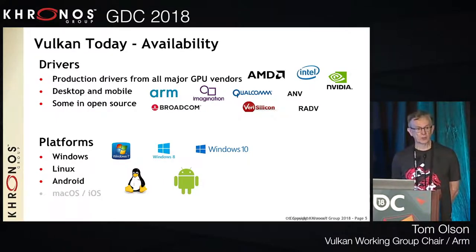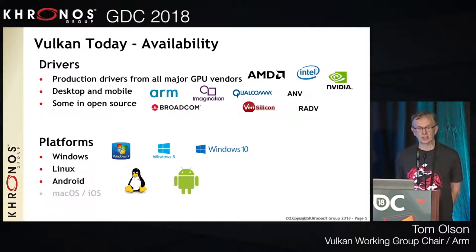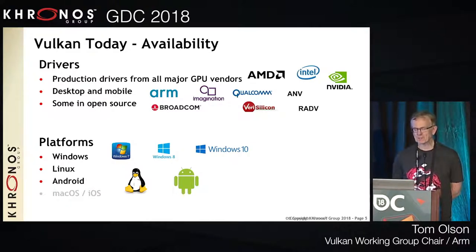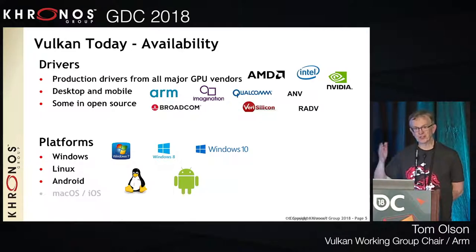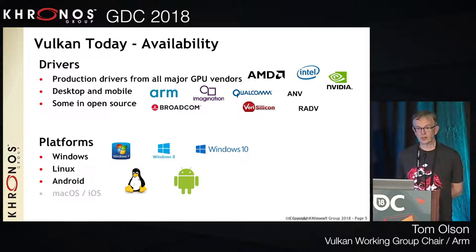Platform support is great on Windows 10 and a little spottier on older versions. On Linux, the Mesa team has ANV and RADV in their mainline. It's not entirely in all distros yet — there's a pipeline before you end up in an Ubuntu or Red Hat distribution. We're very happy about the Android situation where Vulkan is standard and has been shipping for quite a while.